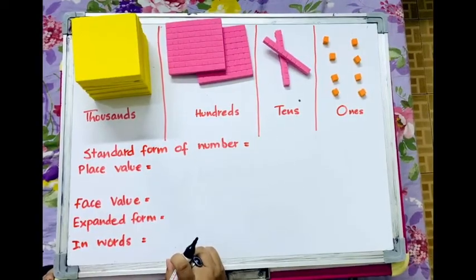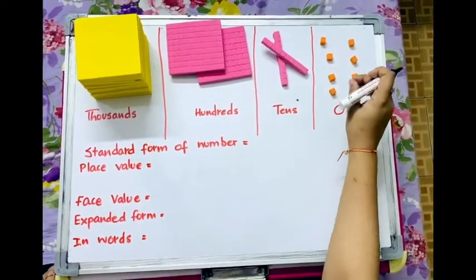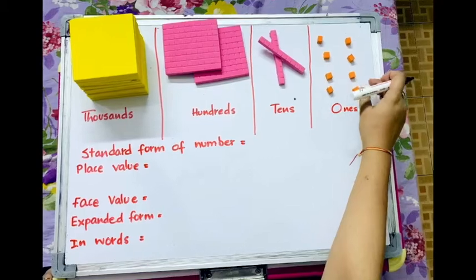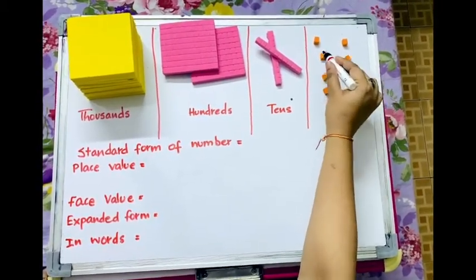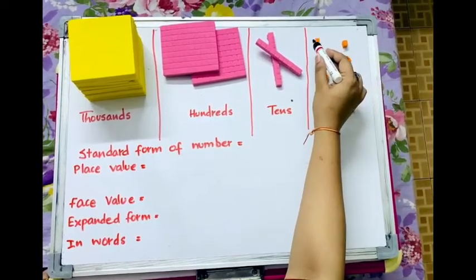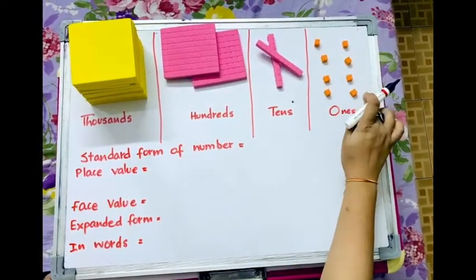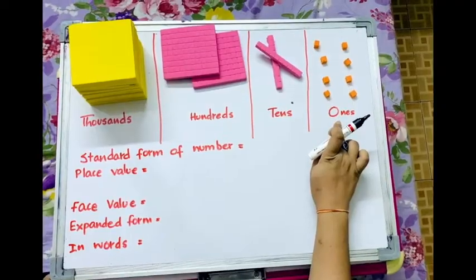Now, let me place Dean's blocks on it to get our number. I have 1, 2, 3, 4, 5, 6, 7 and 8 units of tiny blocks in ones place.